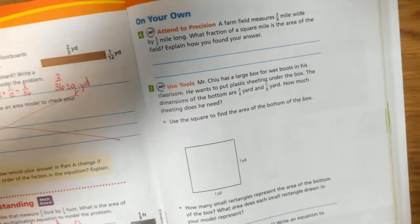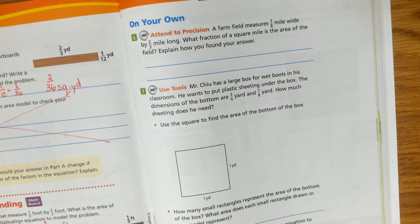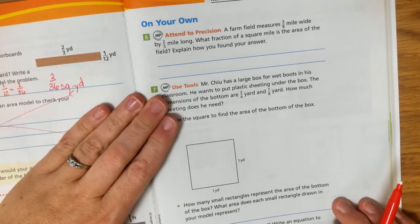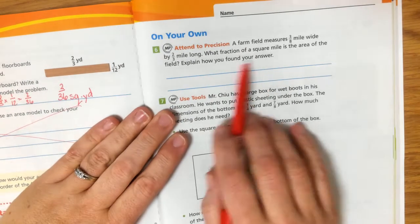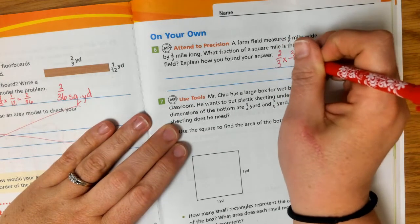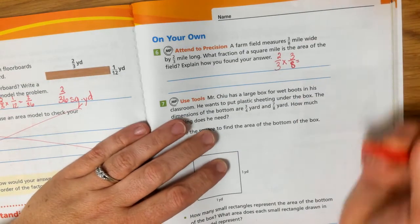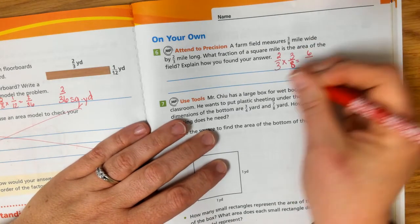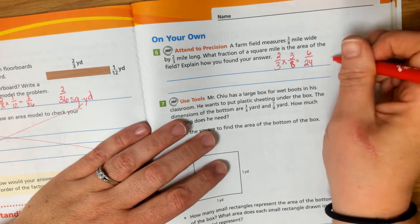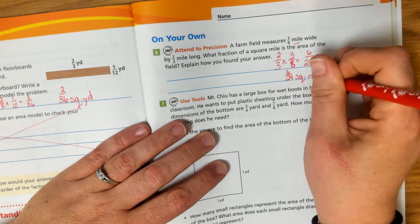OK, so we're on your own part. If you want to do this part independently, and then come back and check your answers, you can, or you can just keep on with me. So a farm field measures 3 eighths mile wide by 2 thirds mile long. What fraction of a square mile is the area of the field? So we want to know the area of the field. Length times width, 2 thirds times 3 eighths. Don't worry about the explaining. We're just going to do the work. The explaining can be done by showing your work. 2 times 3 is 6. 3 times 8 is 24. So 6 24ths square miles.